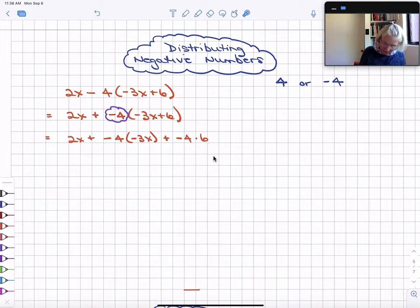Let's go ahead and do some arithmetic as we're simplifying. 2x plus negative 4 times negative 3 times x is positive 12x plus negative 4 times 6 is negative 24.